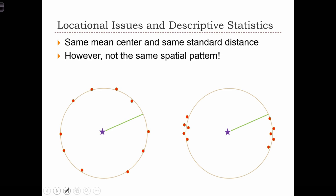We also see that the mean center and standard distance don't necessarily differentiate between very different point patterns. Despite these two point patterns in the examples below being extremely different, we see that they both have the same mean center and standard distance. But very clearly, the point pattern on the left can be described as very different to the point pattern on the right.